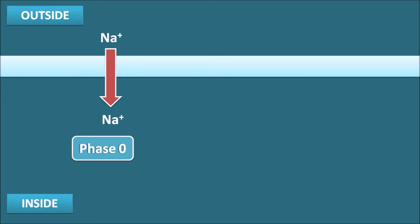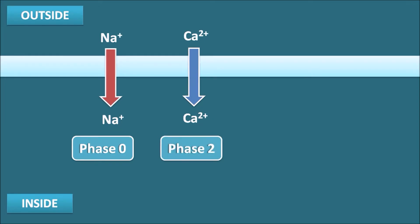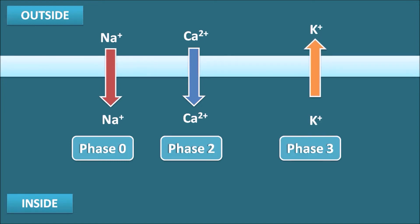This phase is called Phase 0. Phase 0 is followed by the entry of calcium into the membrane, which is responsible for the force of contraction of the heart. This is called Phase 2, the plateau phase. Finally, repolarization of the cardiac membrane is mediated by potassium ions going outside the membrane. This phase is called Phase 3, the complete repolarization phase.